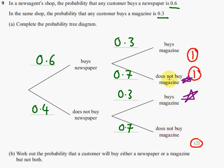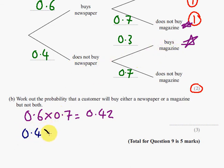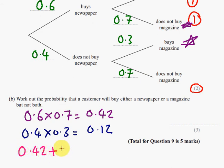We want these two probabilities and add them up. So, 0.6 times 0.7 is 0.42. And the other probability is 0.4 times 0.3, which is 0.12. So the final answer — we need to add those probabilities up. 0.42 add 0.12 gives us a final answer of 0.54.